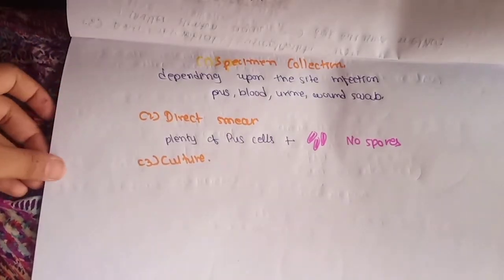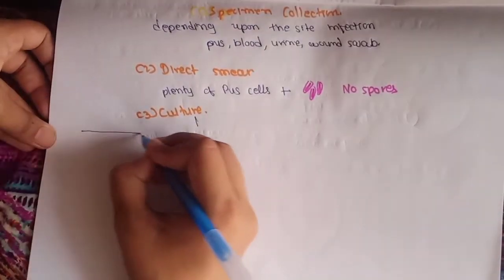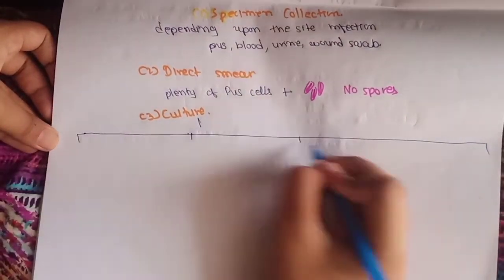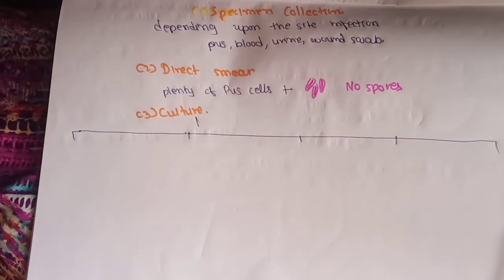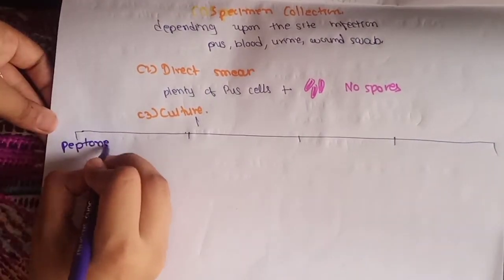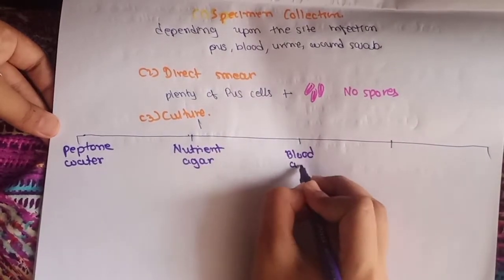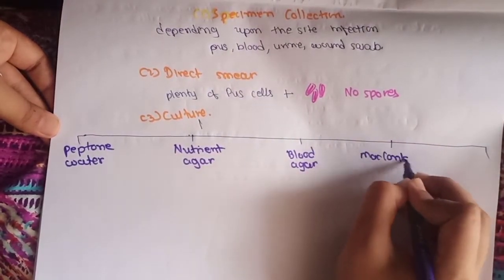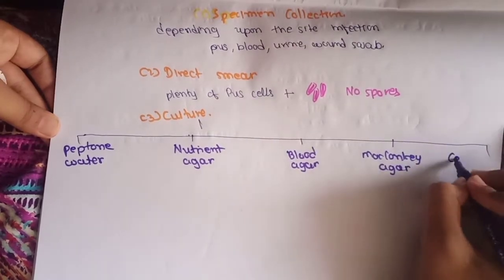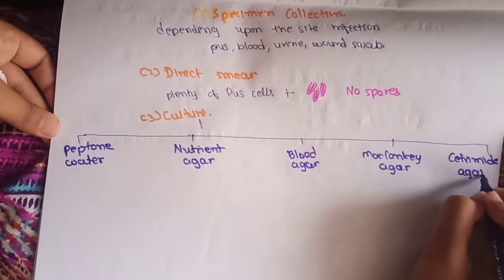We will incubate Pseudomonas aerobically at 37 degrees Celsius for 24 hours. The following culture media are used: first is peptone water, second is nutrient agar, third is blood agar, fourth is MacConkey agar, and fifth is the selective media Cetrimide agar.